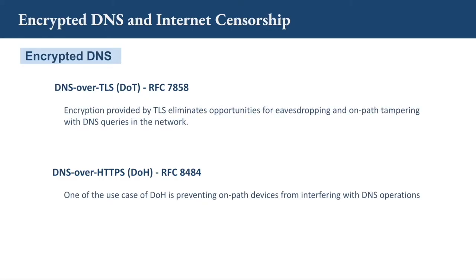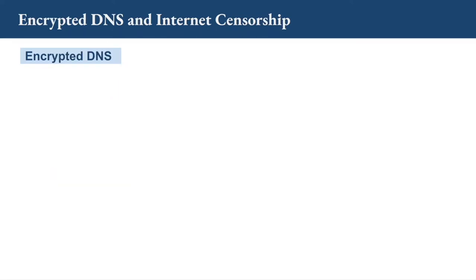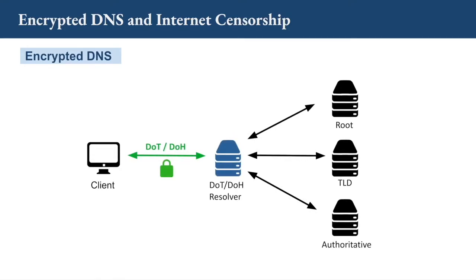According to their RFCs, both DoT and DoH are able to prevent DNS interference from on-path devices. However, in the current implementation, they only secure the communication between the client and the resolver. DNS manipulation can still happen at the resolver or on the path between the resolver and the name servers. So, encrypted DNS provides some protection for the client, but cannot guarantee an authentic DNS response, especially if the resolver itself manipulates the response.